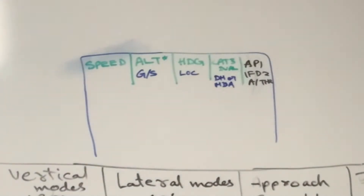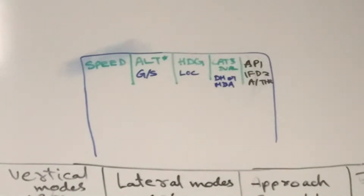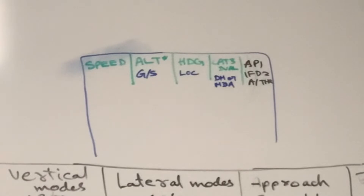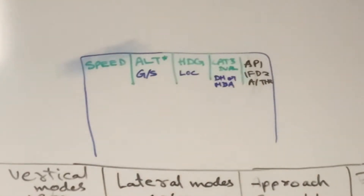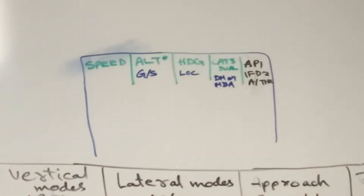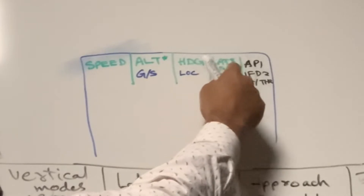Let's discuss some general things about these columns. The first three columns — one, two, and three — the first line shows the modes which are active, shown in green. Green means the active or engaged modes. The second line shows the modes which are armed; they will be in blue or can be in magenta. Magenta indicates those modes which are armed due to certain constraints.